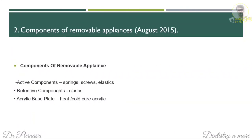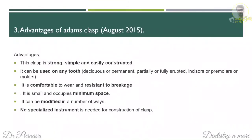The next short note is components of removable appliances. There are three components: active components, which are the springs, screws and elastics; retentive components that help in retention of the appliance, which are clasps; and the acrylic base plate, made up of heat cure or cold cure acrylic. You can also add a diagram for the parts of the removable appliance.